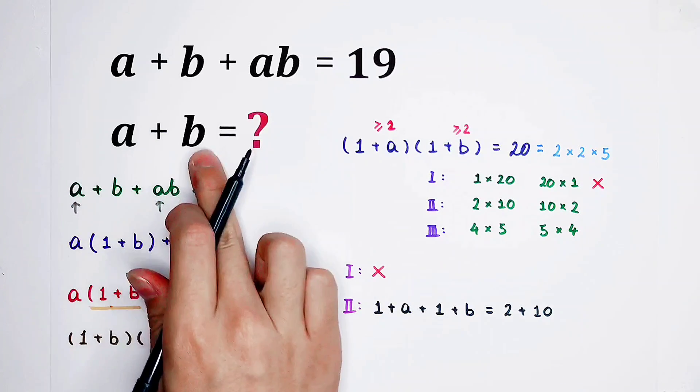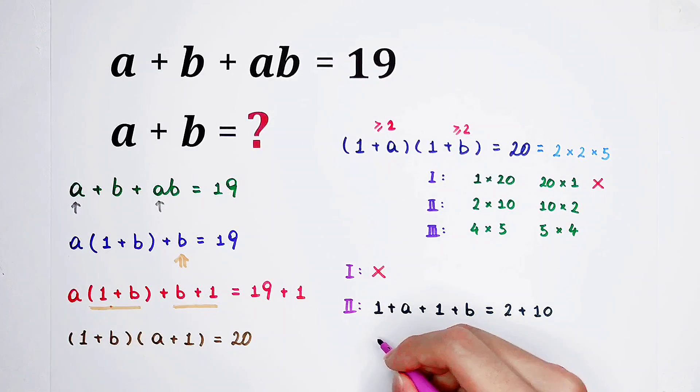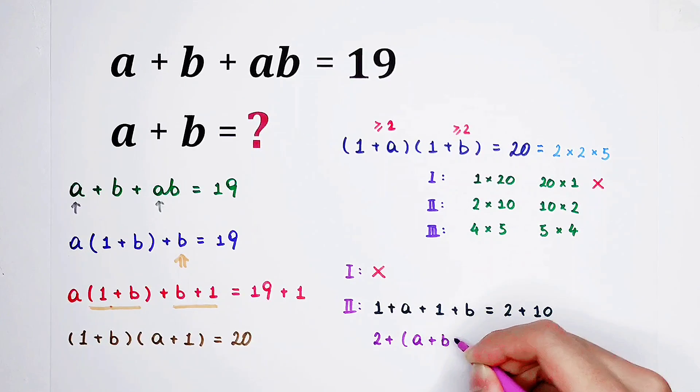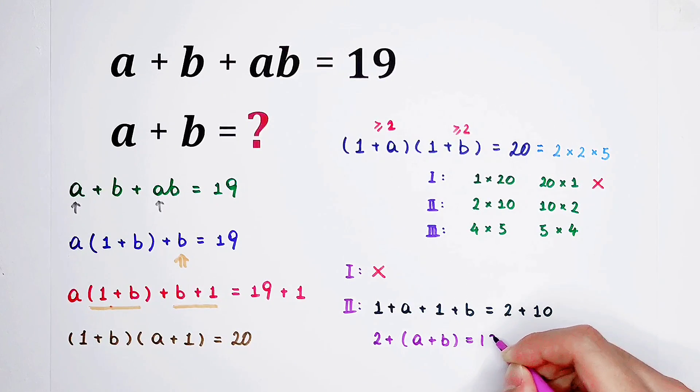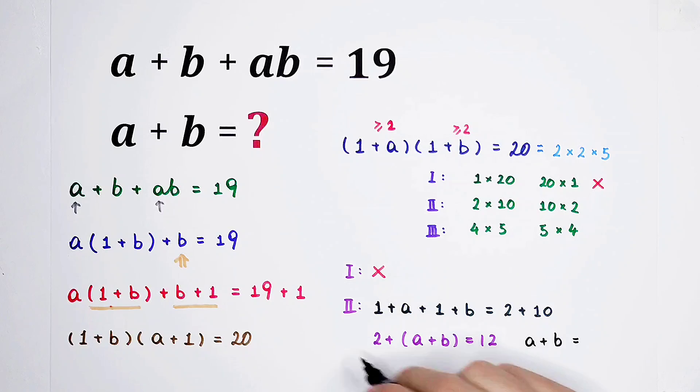So, the sum of A plus B can be easily solved. Here, 2 plus A plus B, it is 12. Then, the value of A plus B is 12 minus 2, is 10.